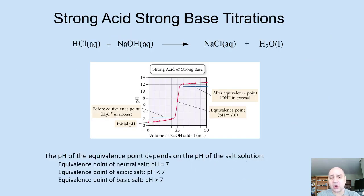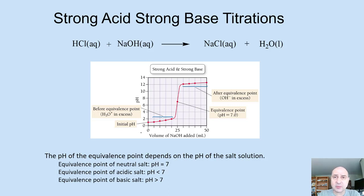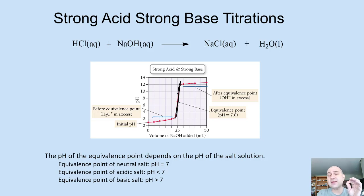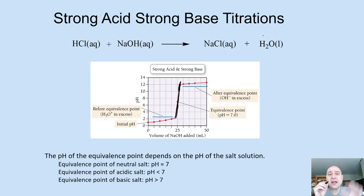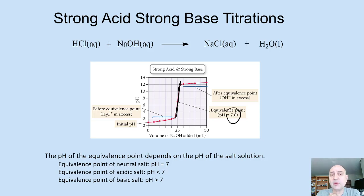Here I'm showing titration curves — you can monitor the pH and graph it for a strong acid/strong base titration. Initially all you have is acid, so you have a very low pH. As you slowly add hydroxide, the pH goes up, but not by much at first. Right before the endpoint it starts going up, and then there's almost a straight vertical section where it doesn't take much to shoot the pH up drastically.